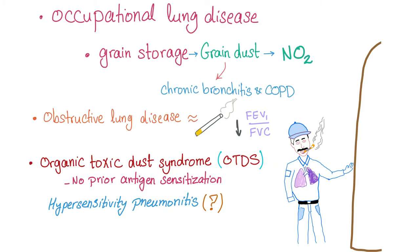Obviously, it involves a farmer and a silo, so it's an occupational lung disease. Grain storage will produce grain dust containing nitrogen dioxide. This can also lead to chronic bronchitis and COPD.